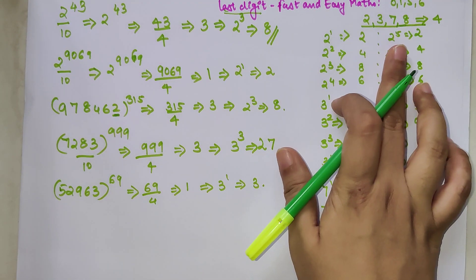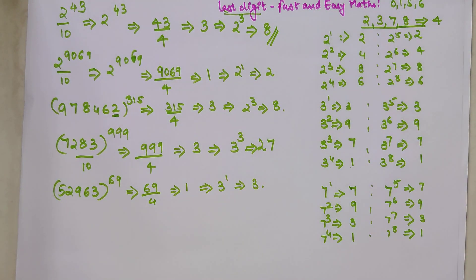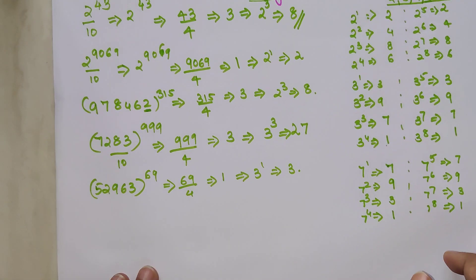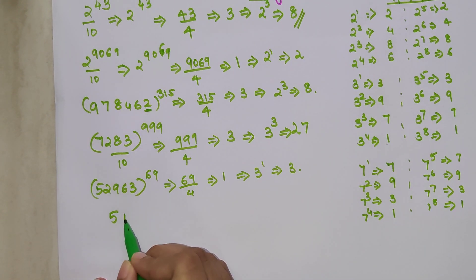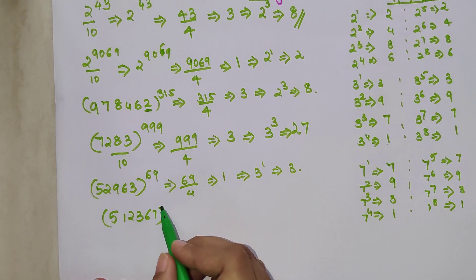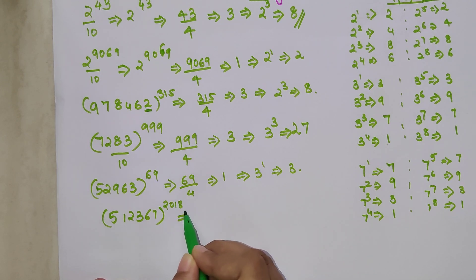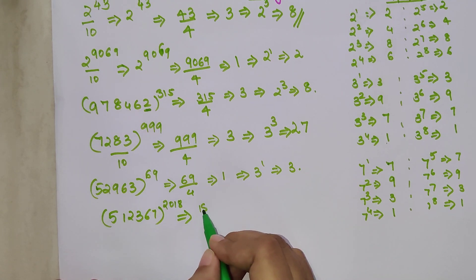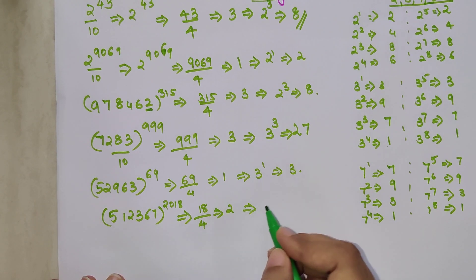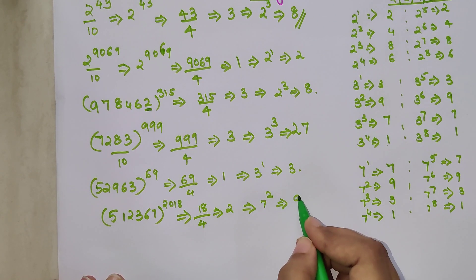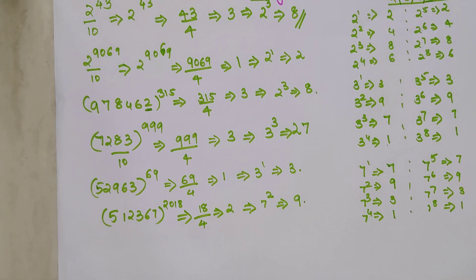The power cycle for 8 is also 4 — you can verify this physically. Now let's find the last digit of 512367 raised to 2018. I'm not going to use the whole number; I just divide 18 by 4 using the divisibility test, and the remainder is 2. So the answer is 7 raised to 2 = 49, and the last digit is 9.